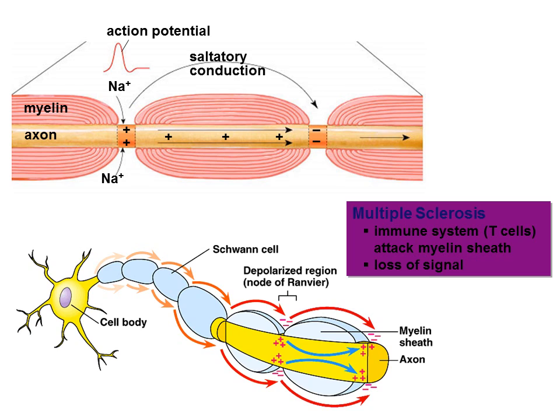In diseases like multiple sclerosis, the immune system — specifically the T cells — attacks the myelin sheath, which causes the transmission of the nerve impulses to be slowed or the loss of the signal between the brain and the body.